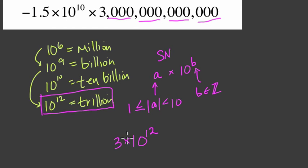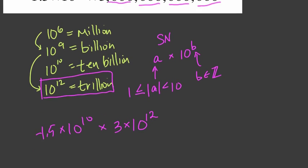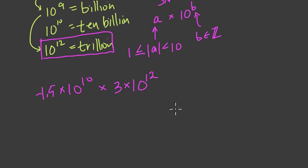And we're multiplying that by negative 1.5 times 10 to the 10th. And this really helps us. How does it help us? Well, since we're writing things in powers of 10, we can use our laws of exponents.